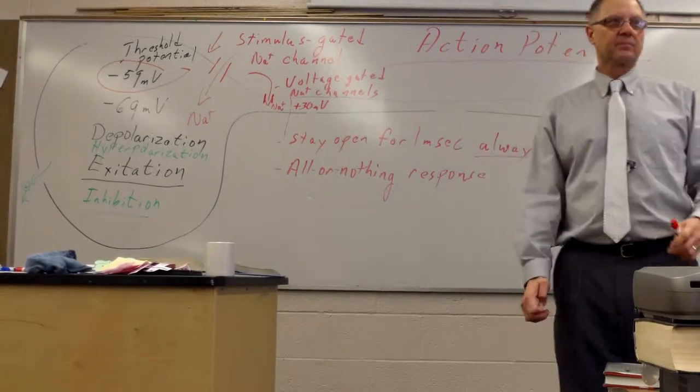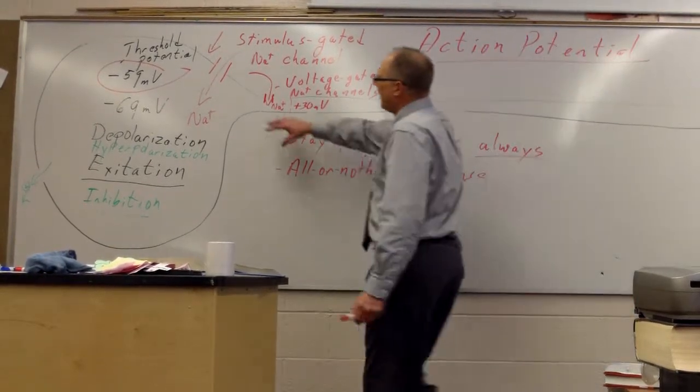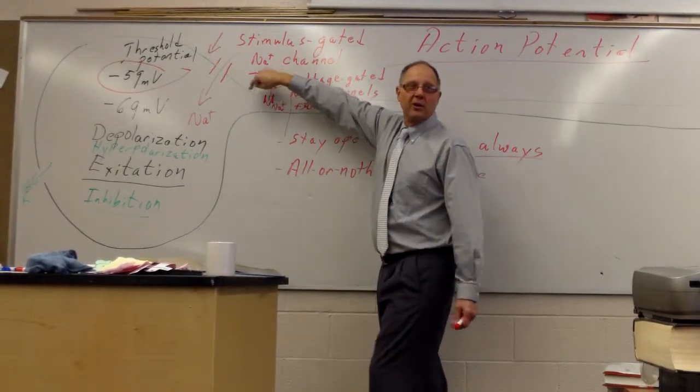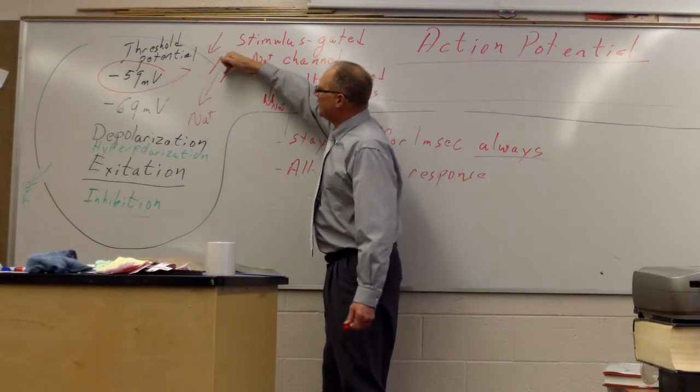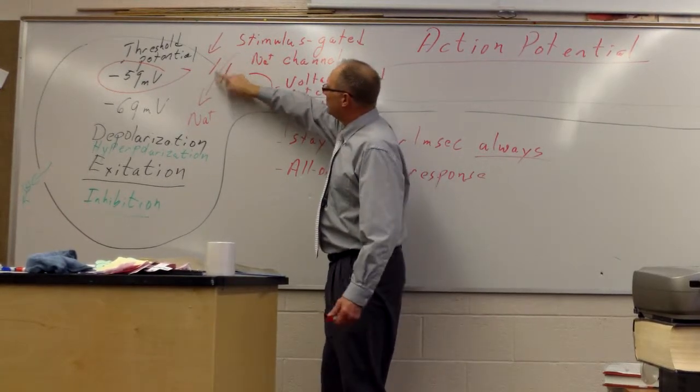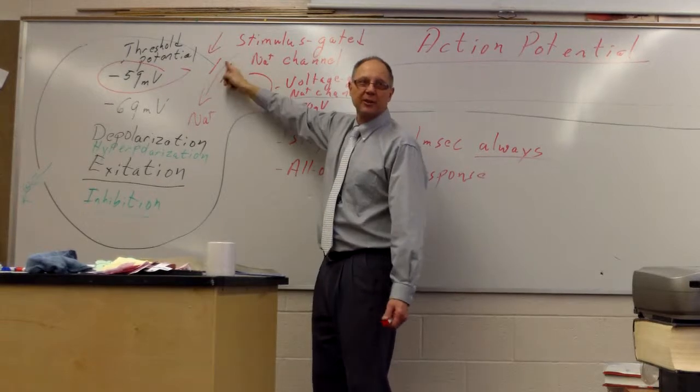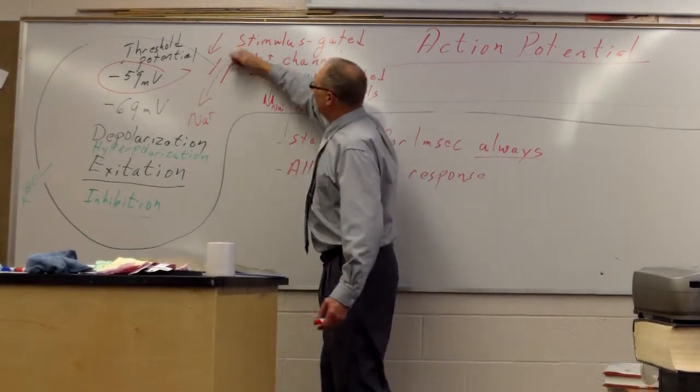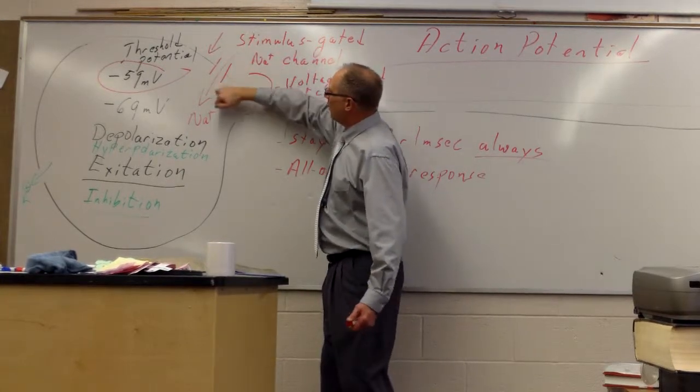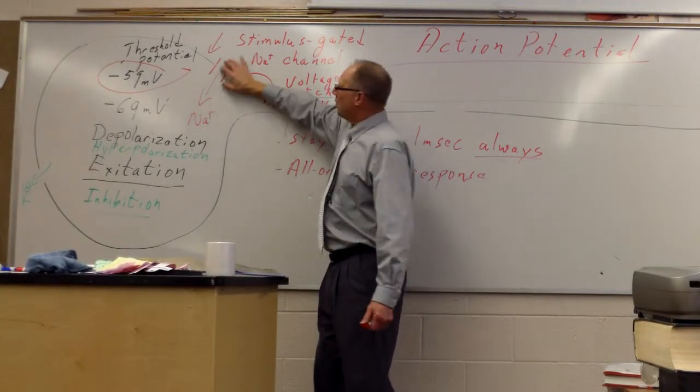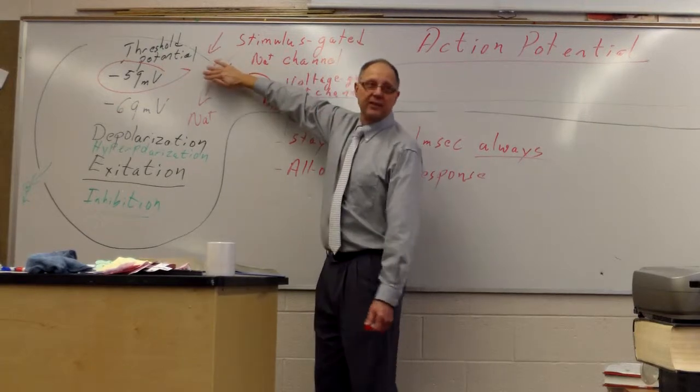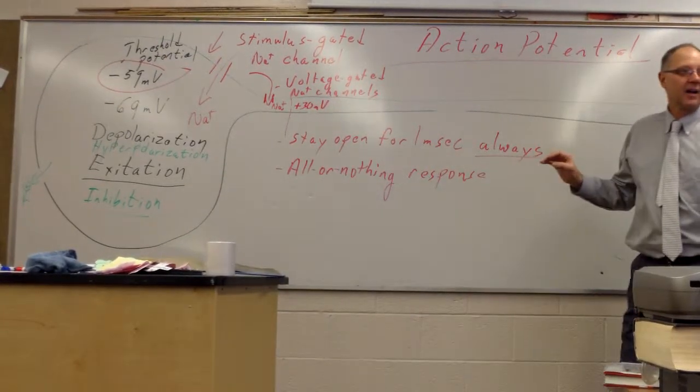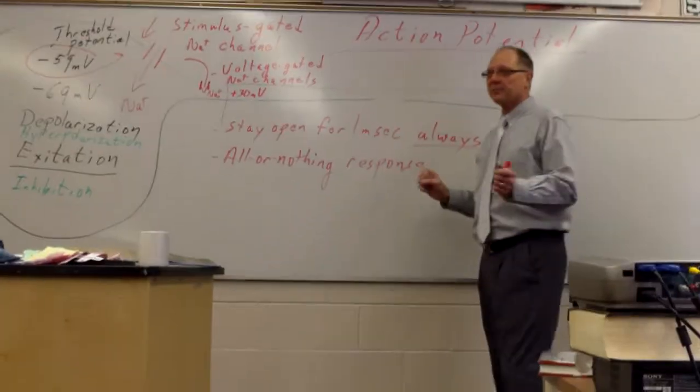Why are we at negative 70? I thought we were at negative 59. Negative 59 is here. That triggers these guys to open. Remember, it's the membrane itself. It's this point on the membrane where you have a difference in polarity. It isn't the whole cell. So where these stimulus gated channels were open and you've got some sodium coming in, we have a local area of negative 59. But that doesn't mean the rest of the membrane is at negative 59. Okay? Does that help? Good.